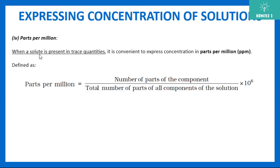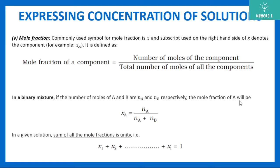Next is parts per million, or ppm. Whenever the solute is present in trace quantity — meaning a very very small quantity — we use ppm. ppm is the number of parts of the component divided by total number of parts of all components in the solution, multiplied by 10 to the power 6. The idea is how many parts are present in one million.